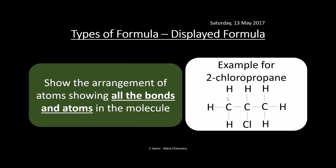Displayed formula basically shows the arrangement of atoms showing all the bonds in a molecule — all your carbons, all your bonds, everything. So when it's asking for a displayed formula, make sure you draw it like this. This is 2-chloropropane as an example.